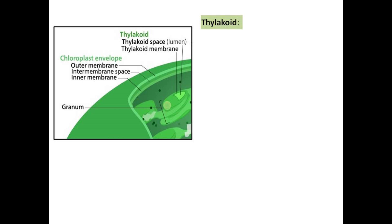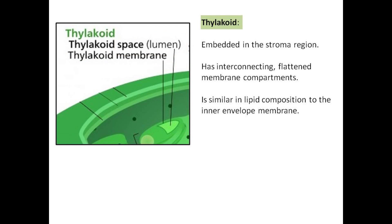The thylakoid is embedded in the stroma region. It has interconnecting, flattened membrane compartments and is similar in lipid composition to the inner envelope membrane.